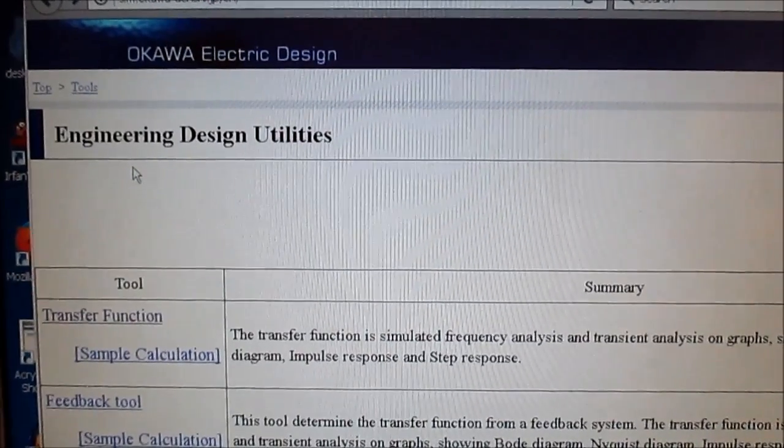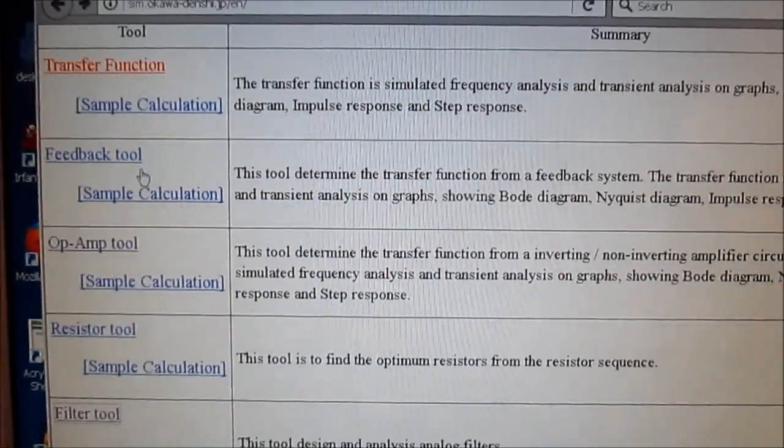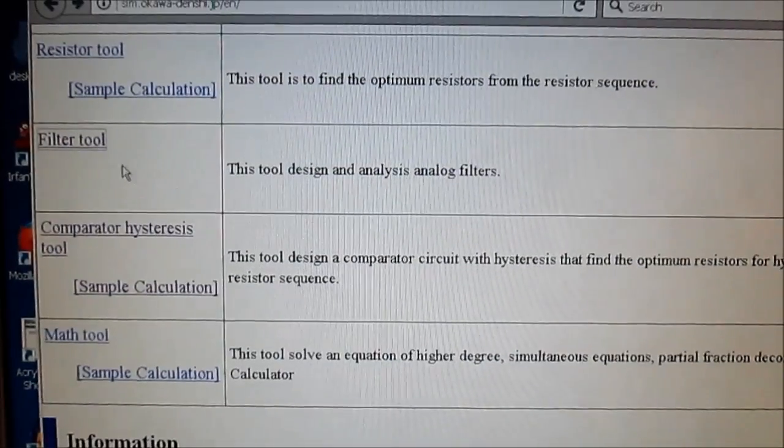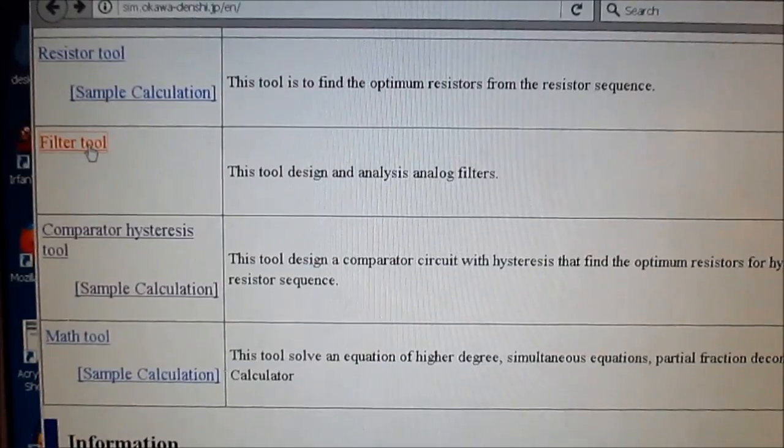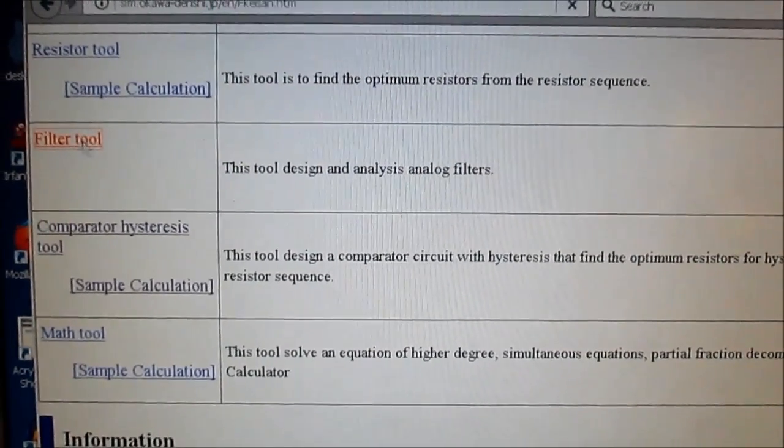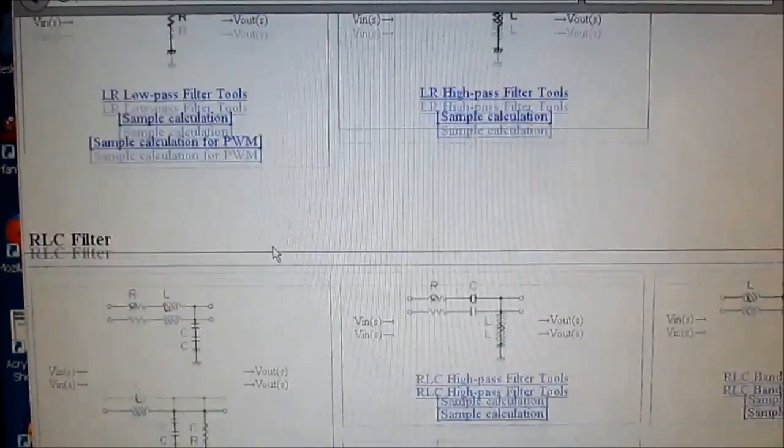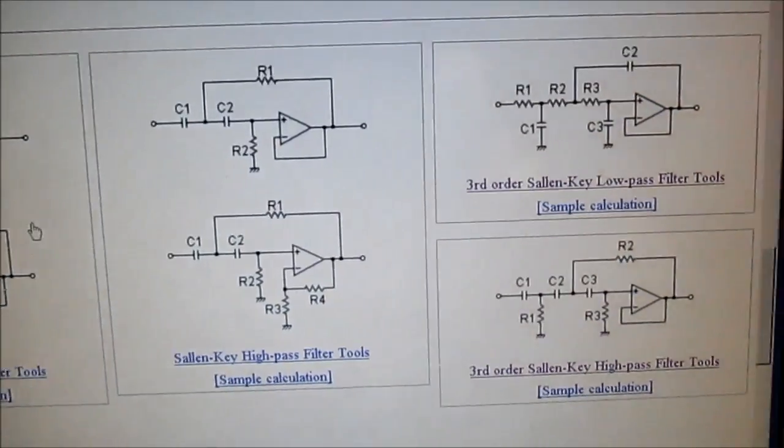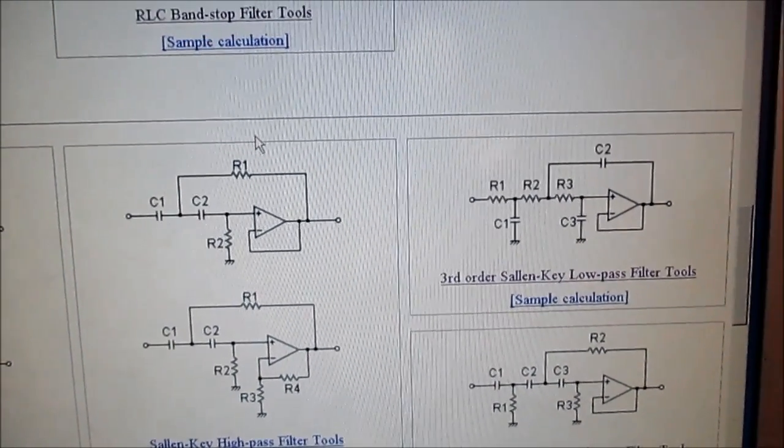This Okawa Electric Design website is very handy for advanced electronic calculations. It has all kinds of little tools. I will put a link in the description. So, you can have this. Here is the filter tool. And then basic filters. And we're looking for... Here it is. Third order Sallen-Key low pass.